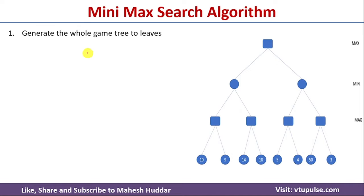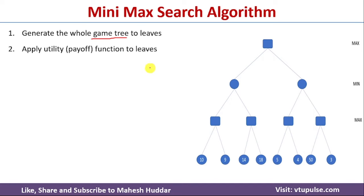In the minimax search algorithm, the first thing we need to do is generate the game tree starting from the root node down to the leaf nodes — drawing all possibilities for each node. Next, we apply the utility or payoff function to find the values of the leaves. Since the game tree and leaf values are already given to us, we don't need to do this step. If they were not given, we would need to generate the tree and compute the leaf values.